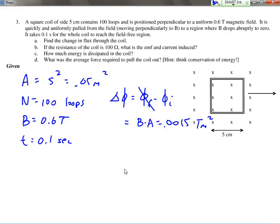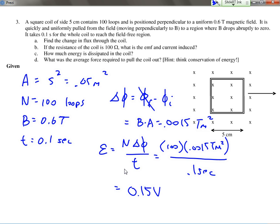So if I'm solving for the EMF, which equals to N times the change in flux divided by T, I end up with 100 loops times 0.0015 tesla meters squared divided by 0.1 seconds, which equals to 1.5 volts.